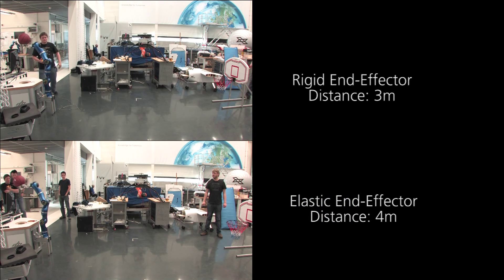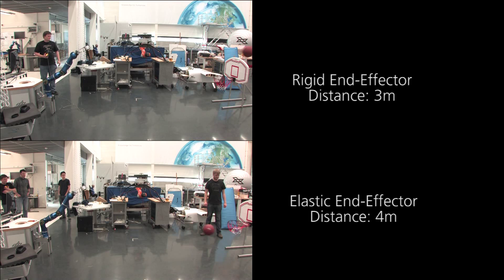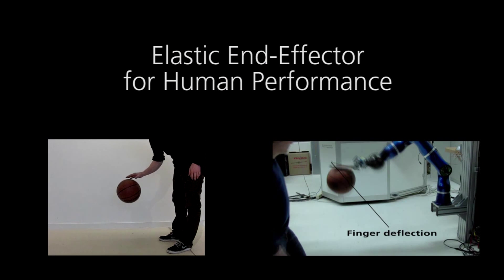Equipping an intrinsically stiff robot with an elastic end effector showcases this effect for a basketball throw. Also, during human dribbling, the use of the elastic finger and wrist properties is apparent.